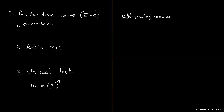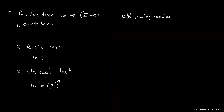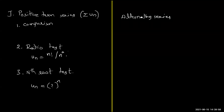Even such problems can be solved by other tests, but the nth root test is the most suitable method. When u_n has expressions like n factorial, n to the power of some finite number, or x to the power of n, then the ratio test is the most suitable test in this case.